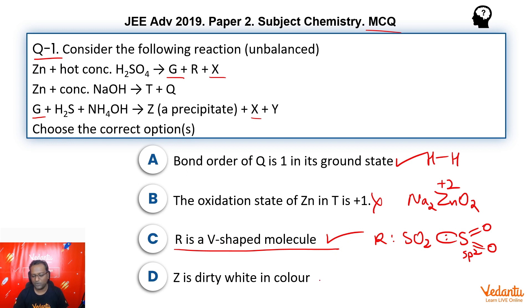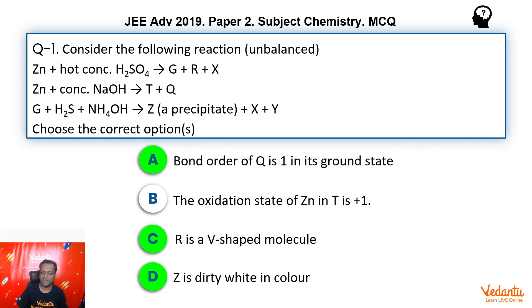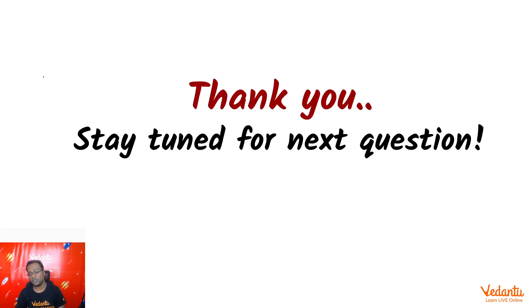Z is a dirty white color precipitate. Absolutely correct. ZnS is a dirty white color precipitate. So the answers here are A, C and D, guys. Interesting question based on zinc. Thank you so much for joining us. And we'll be back with more questions. We'll be right back.